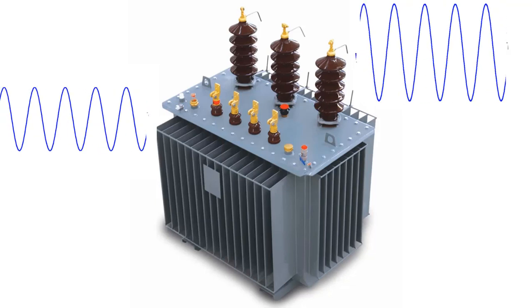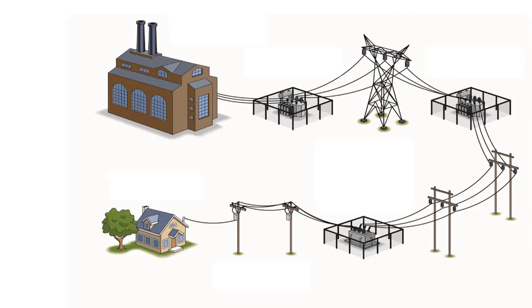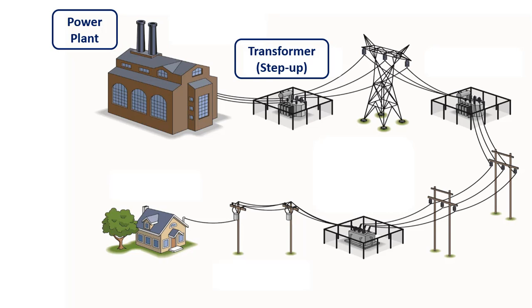Until the voltage produced in the power plants comes to our homes as 110 volts AC, it is first exposed to the step-up and then to the step-down process with transformers. First, a voltage is produced in the power plant with the help of generators. Then, this voltage is converted to high voltage with the help of transformers.